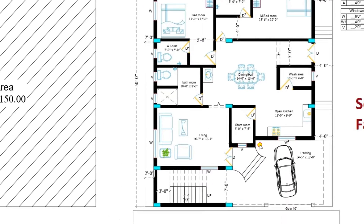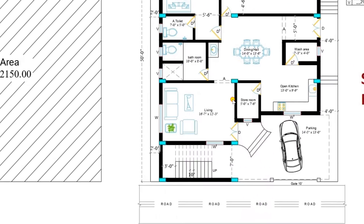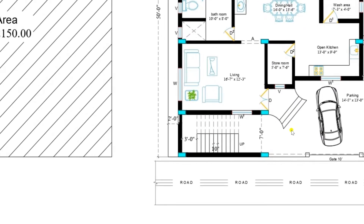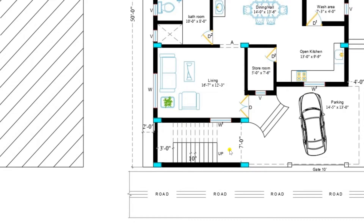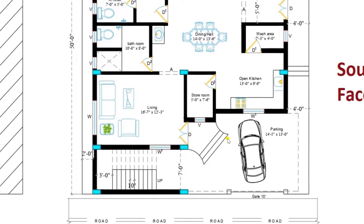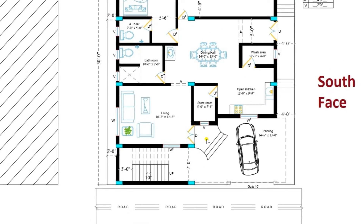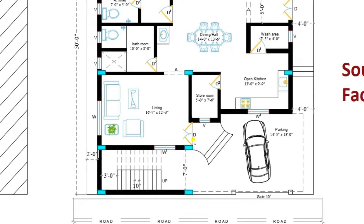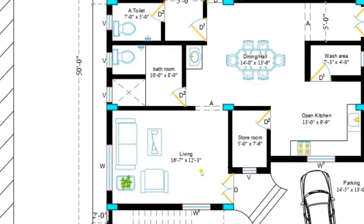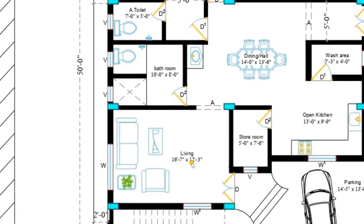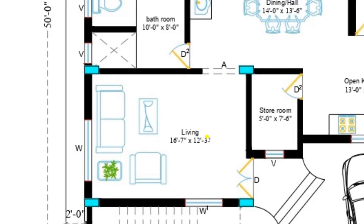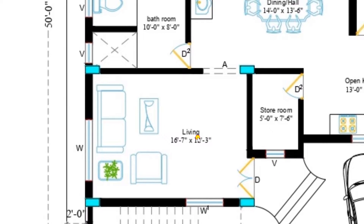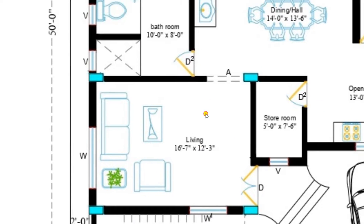On the left side corner you can view there is a staircase available of width 7 feet, and from here you can move towards upstairs. Now we are entering into the main living room. The living room is of size 16 feet 7 inches by 12 feet 3 inches. This room can be used as a living room, guest room, or hall.